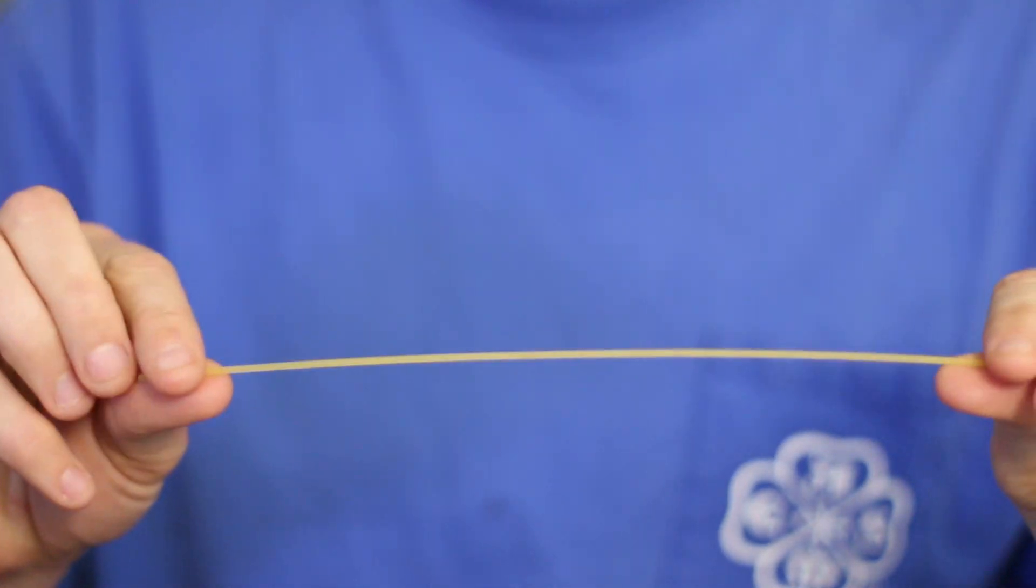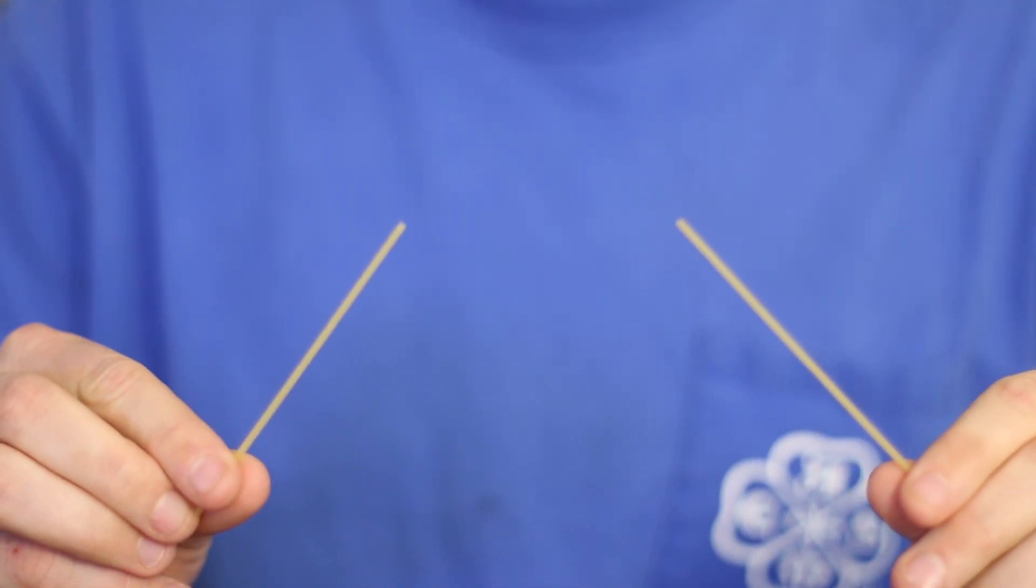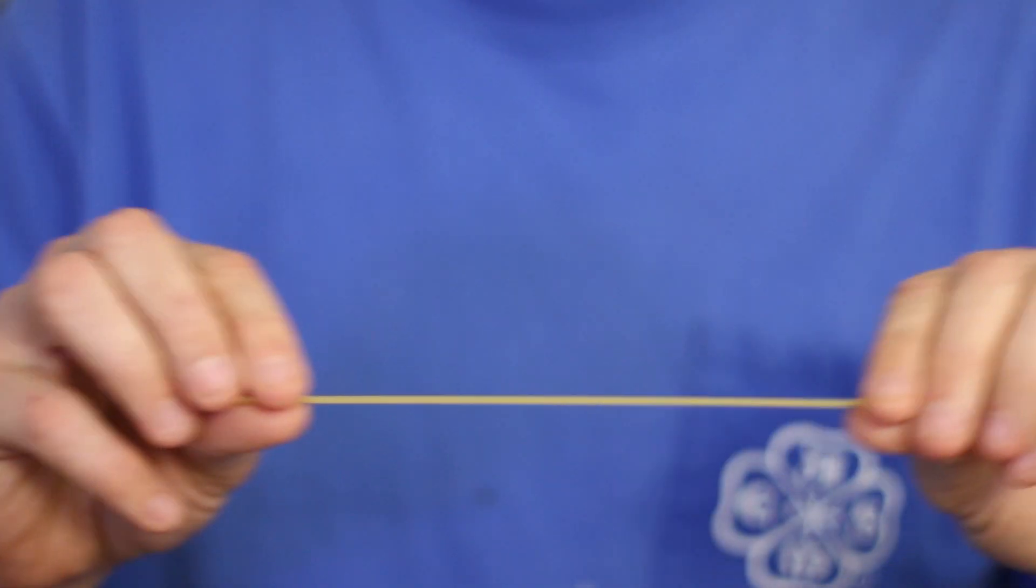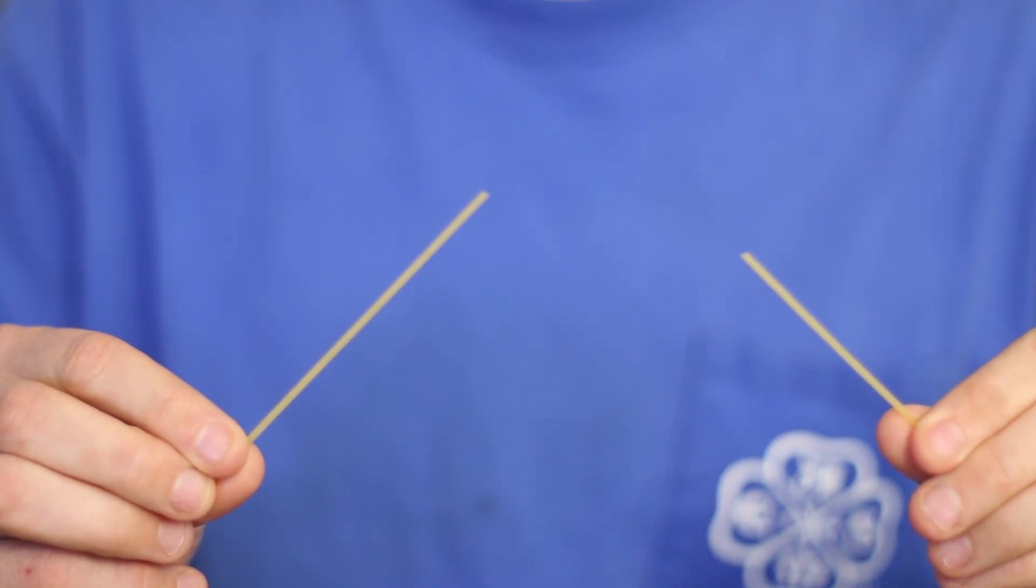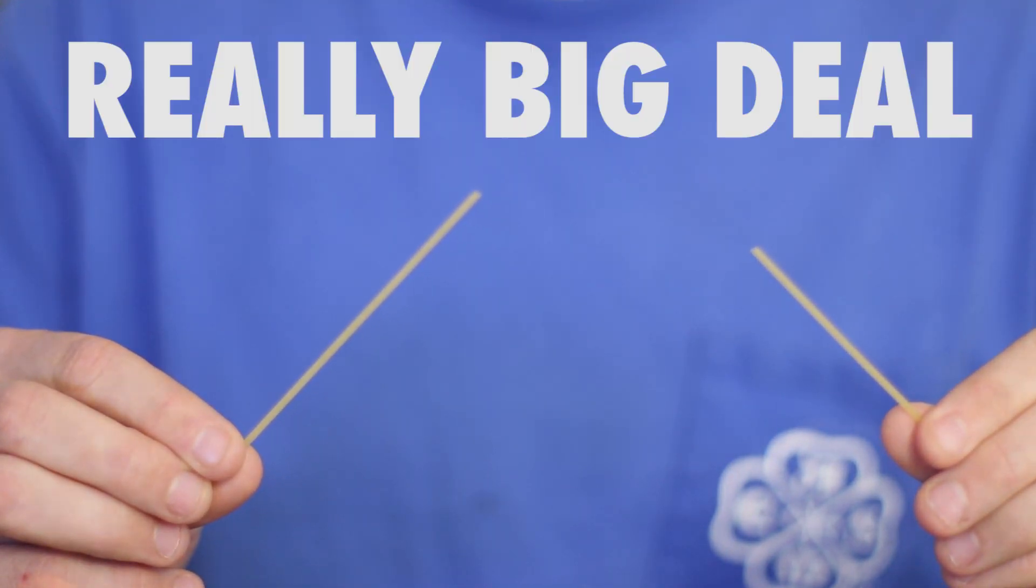If you haven't already run to the kitchen, do that now. Grab some spaghetti and goggle up because science is about to happen. One at a time, grab a noodle on both ends and bend it until it breaks. You'll notice that the majority of the noodles break into more than two pieces. Now you might not think this is a big deal, but it's a really big deal.